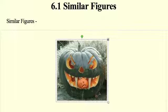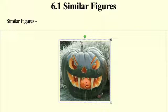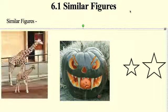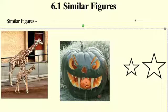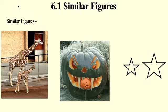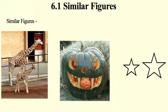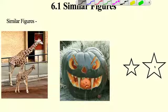I got these two pumpkins — a pumpkin and a pumpkin. We're talking about similar figures. What are similar figures? Here are some examples: a mama giraffe and a baby giraffe, a big pumpkin and a little pumpkin, and two stars. Similar figures are what?